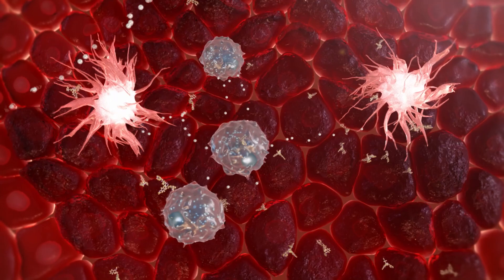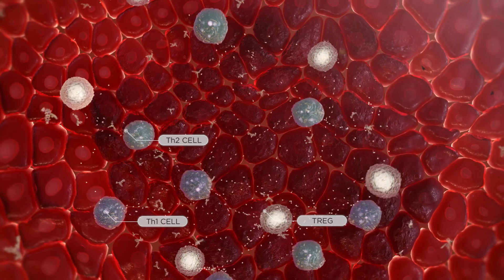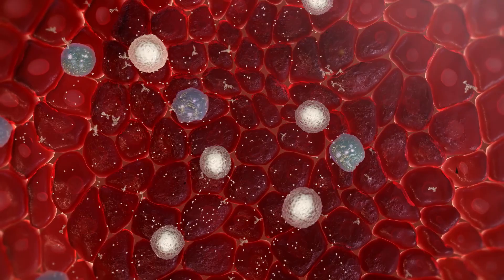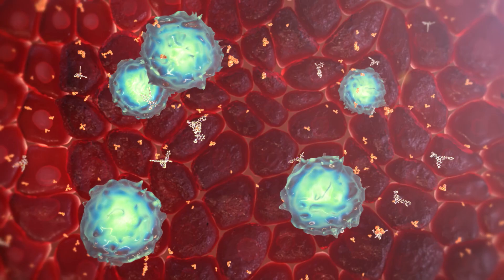Immunoproteasome inhibition has been shown to cause a decrease in inflammatory T-cell activity and an increase in regulatory T-cell function. This may help to rebalance the immune system and induce a deeper anti-inflammatory response relative to current standards of care. KZR-616 also targets immunoproteasomes within B-cells, which leads to a reduction in autoantibody levels.